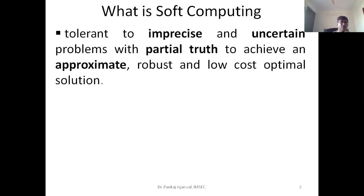The problem with most real-world problems is that there could be issues with the input — the input may not be precise, may not be certain, or we may only know partial truth about the input. If the input is incomplete, imprecise, or uncertain, how do we go about solving the problem? Human beings are very good at solving these kinds of problems. We can handle a lot of impreciseness and uncertainty, and still produce correct output in most cases.